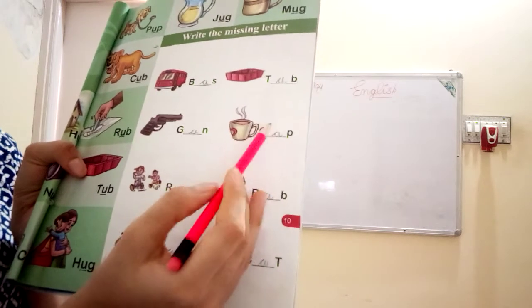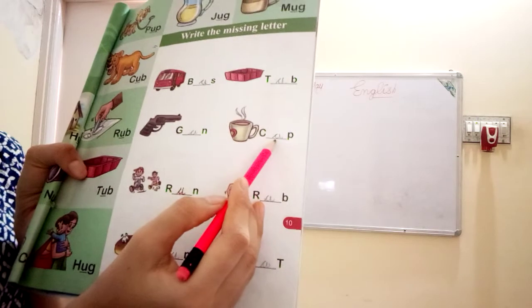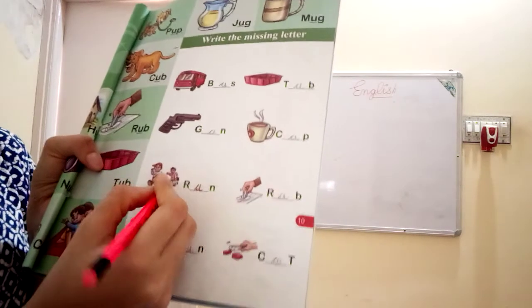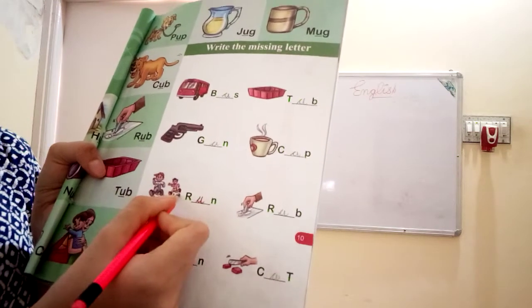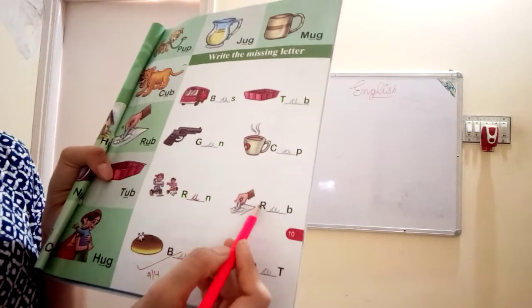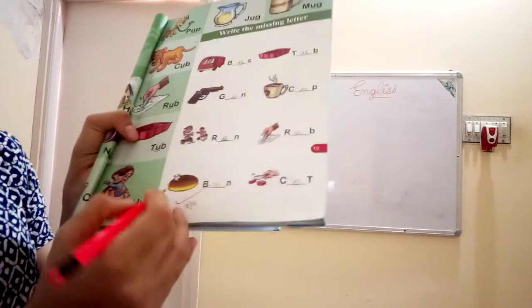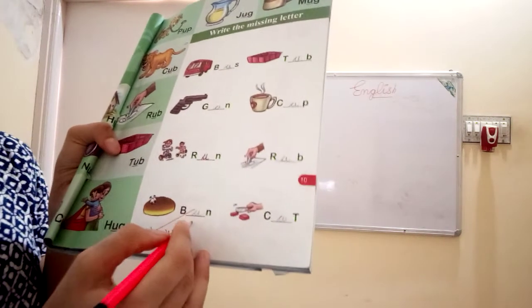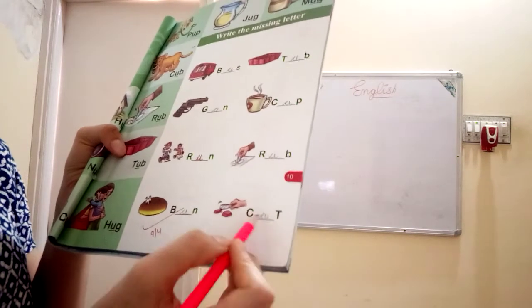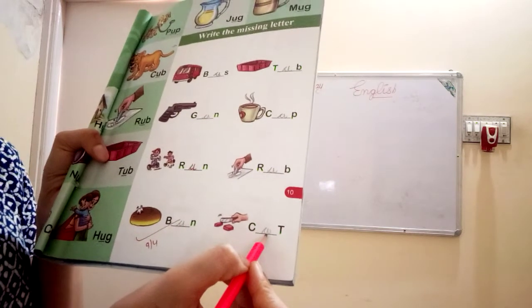Cup hai na, to cup ki spelling kya hoti hai? C.U.P. Cup. To yahan pe aapko kya fill karna hai? U. Next is R.U.N. Run. Rub. R.U.B. Rub. Yahan pe aapko kya fill karna hai? U. Bun ki spelling bhi B.U.N. Bun. Cut. C.U.T. Cut. Yahan pe bhi aapko kya fill karna hai? U.